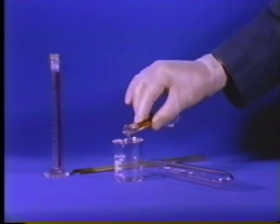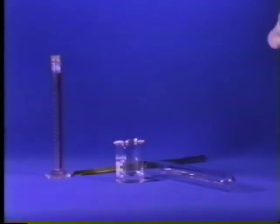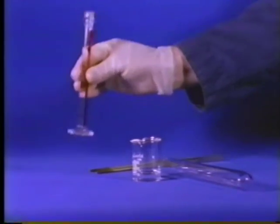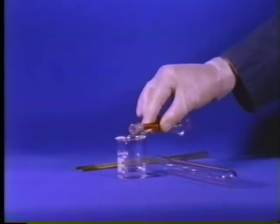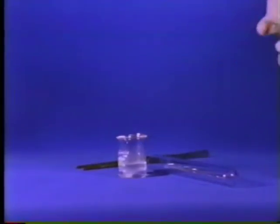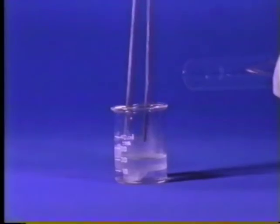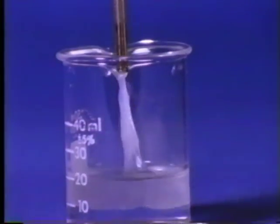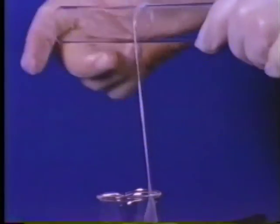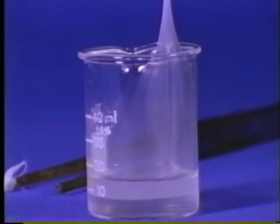Nylon forms at the interface between the two immiscible solutions. As the nylon is drawn out with the tweezers, more nylon is produced at the interface. The reaction continues until one of the reagents is used up.